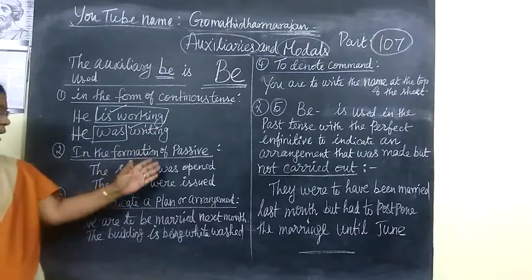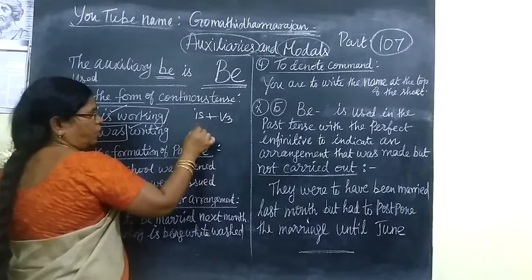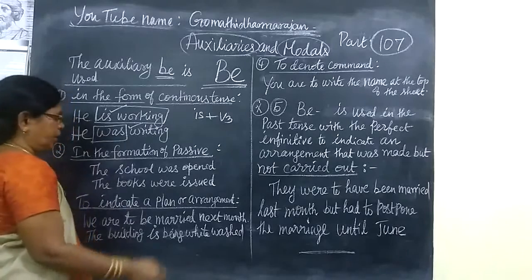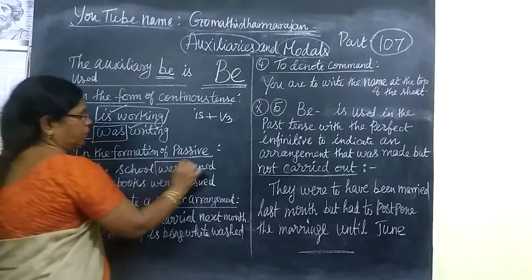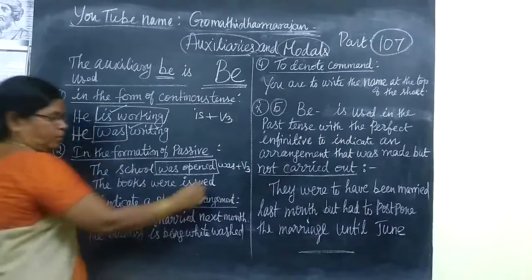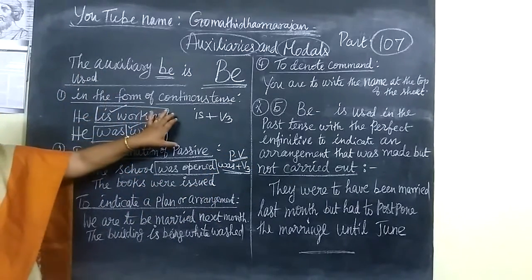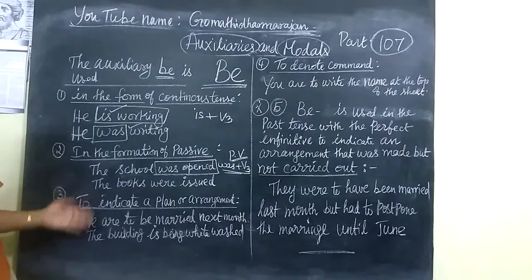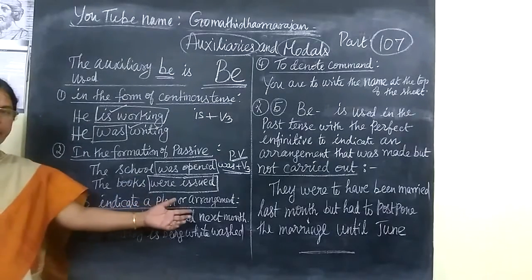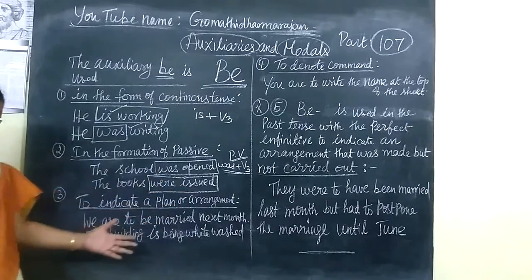We also use the be-form in the passive form. And the be-form is used to indicate a plan, arrangement, or agreement. When there is a plan or arrangement or agreement, we use the be-form.